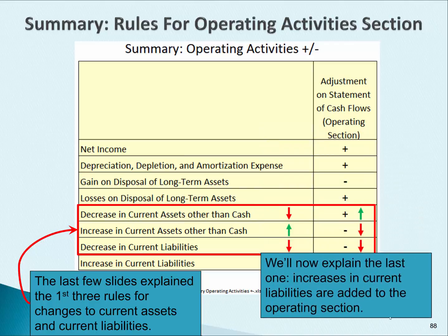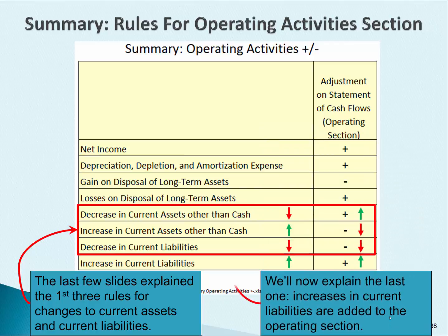Increases in current liabilities are added to the statement of cash flows. Before we get to the fourth rule, notice the direction of the arrows. For current assets, the arrows are opposite — if current assets decrease, you add to cash; if current assets increase, you subtract from cash. When we get to current liabilities, notice the arrows are in the same direction.